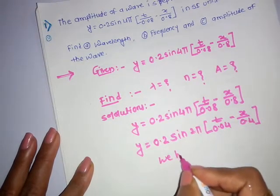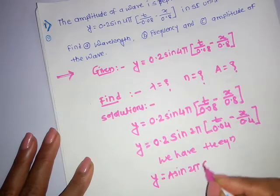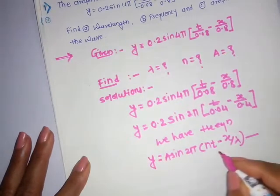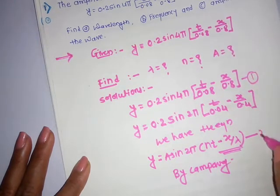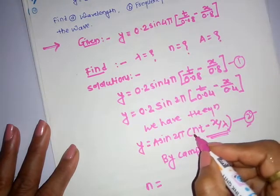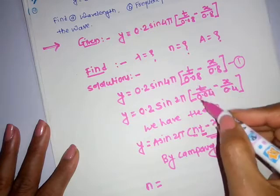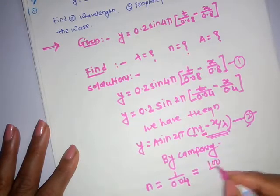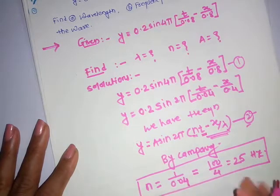We know the standard equation is y = a sin 2π(t/T - x/λ). By comparing equation 1 with equation 2, the coefficient of t gives n = 1/0.04 = 25 Hz. So the frequency is 25 Hz.